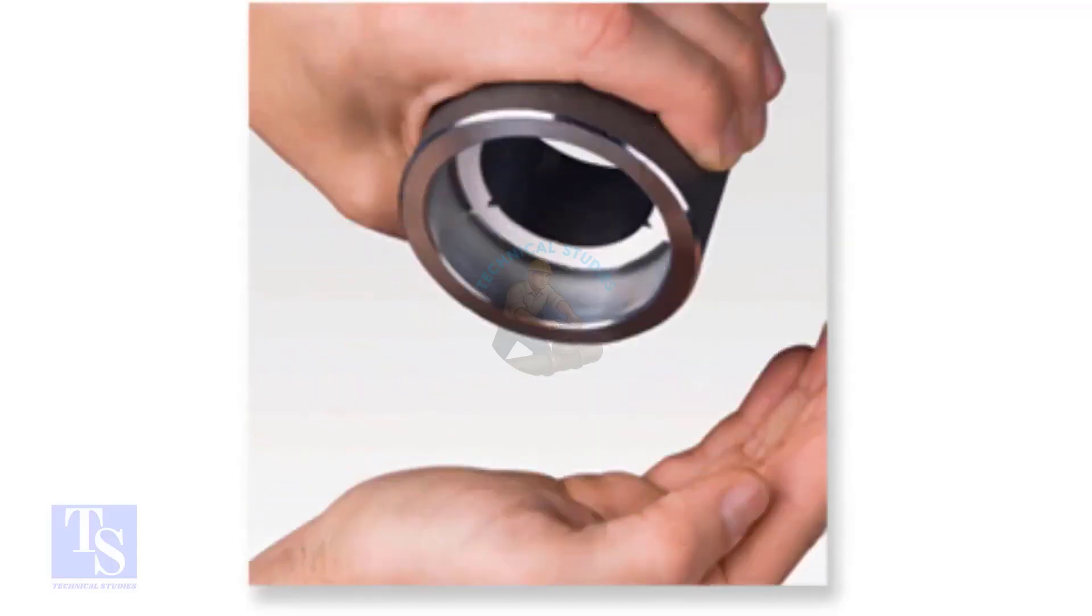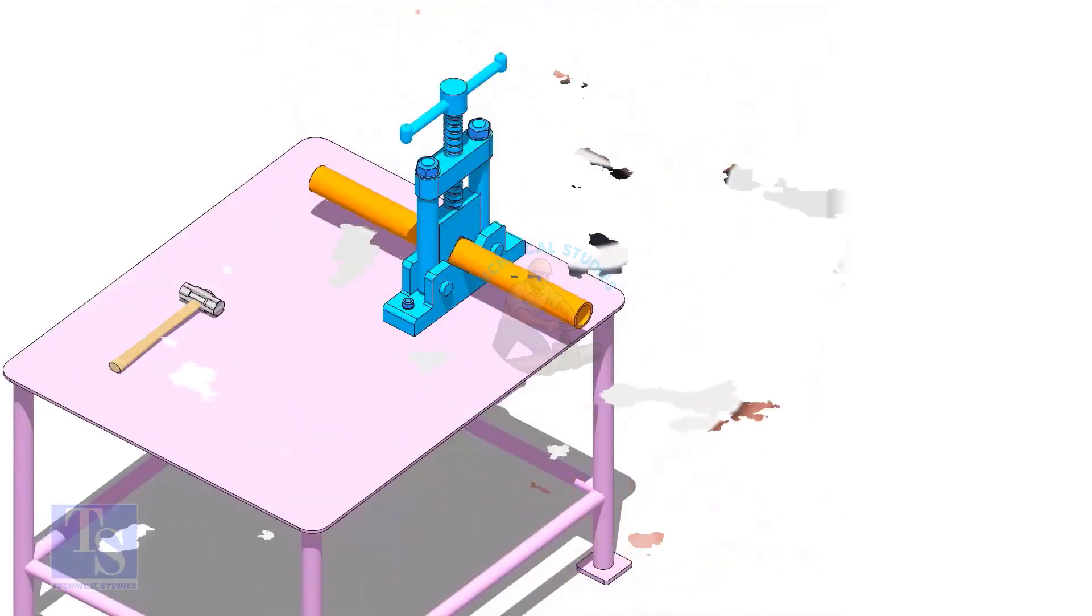There are two methods to maintain the clearance in a joint: inserting a stainless steel spacer ring or a water-soluble ring, or adjusting the gap manually. We are going to mark the gap manually.